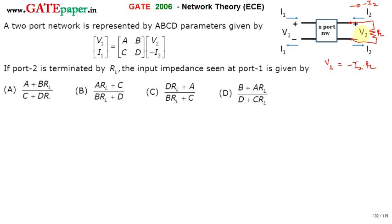V2 expects that plus-minus current should flow downwards, but I2 is flowing in upward direction, so you must make a minus sign. So V2 is equal to minus into minus I2 into RL whenever port 2 is terminated with a load resistance of RL.